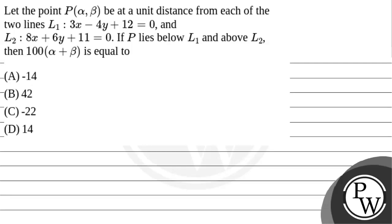Let us read this question. The question says: let the point P(α, β) be at a unit distance from each of the two lines L1: 3x minus 4y plus 12 equals 0, and L2: 8x plus 6y plus 11 equals 0. If P lies below L1 and above L2, then 100α plus β is equal to?